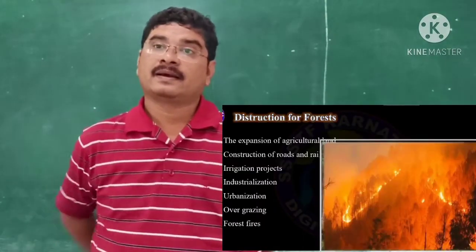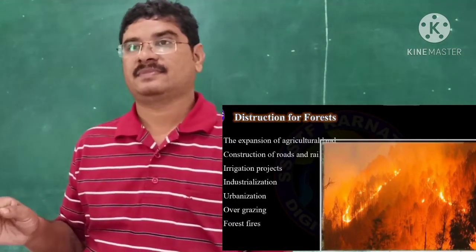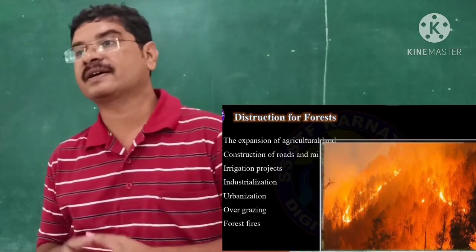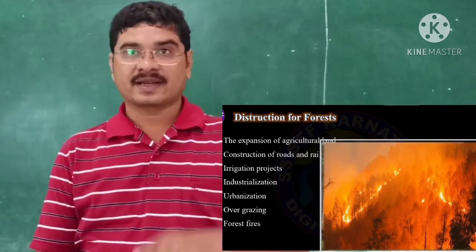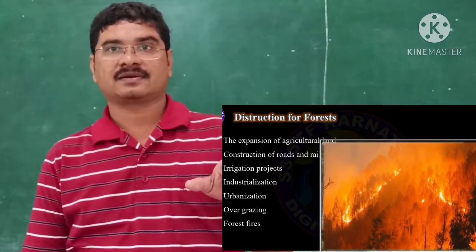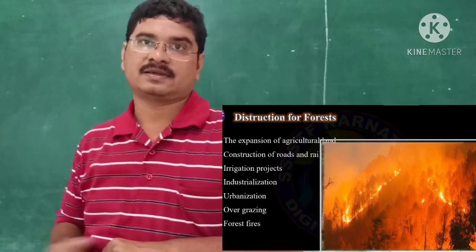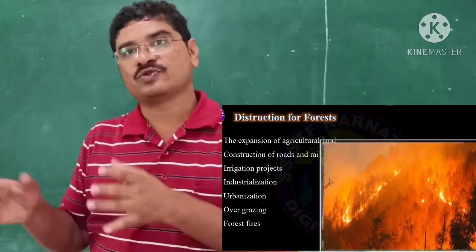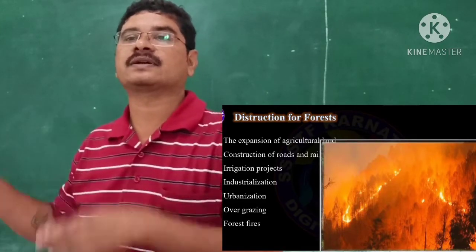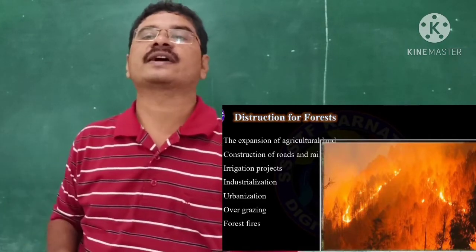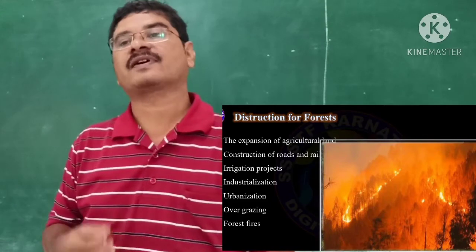Forest land is decreasing due to the expansion of agricultural land, construction of roads and railways, irrigation projects, industrialization, urbanization, overgrazing, and forest fires.